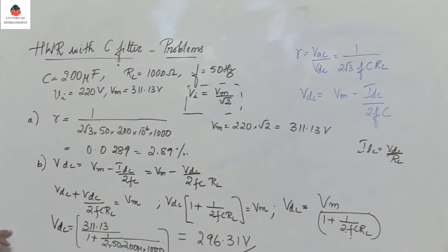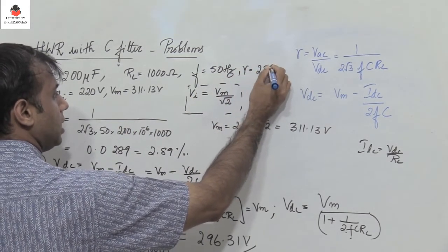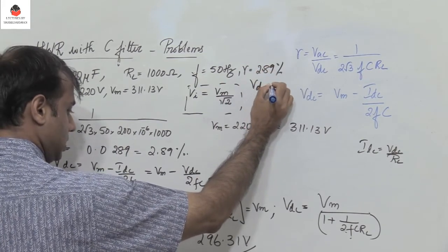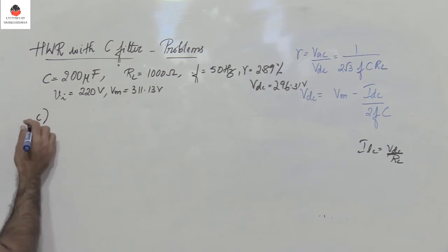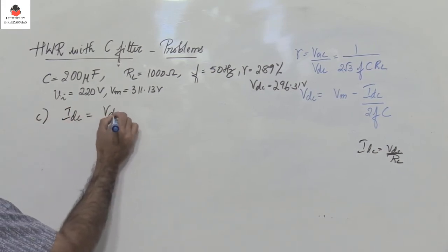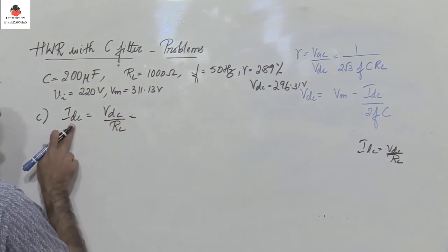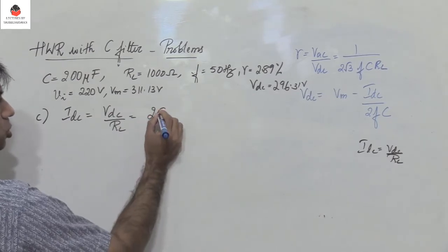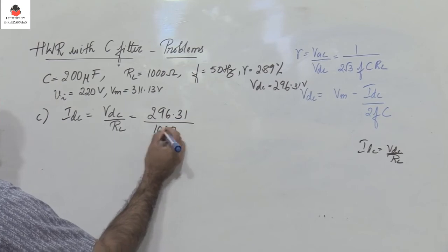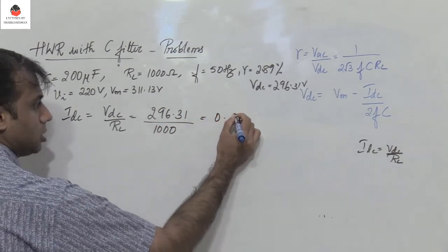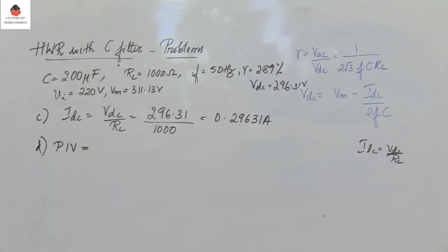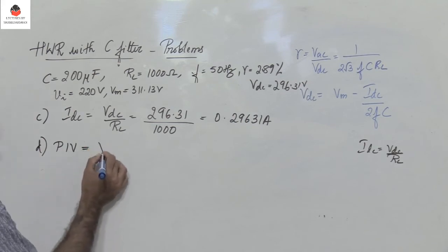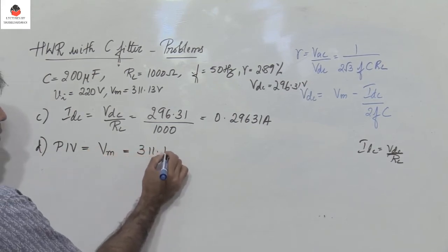Make sure you do the calculations correctly. VDC is 296.31 volts and gamma is 2.89 percent. Next, find the DC load current IDC — very easy. IDC equals VDC divided by RL, which is 296.31 divided by 1000, giving IDC equals 0.29631 amperes. Next, find the peak inverse voltage. For a half wave rectifier, PIV equals Vm, so it is 311.13 volts.